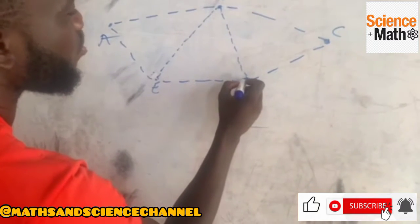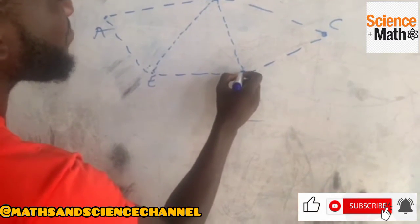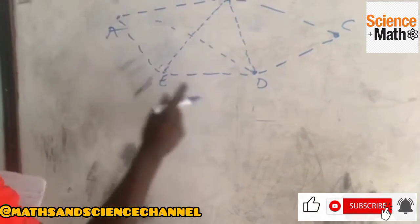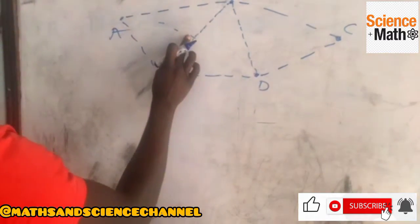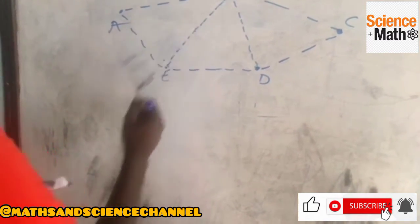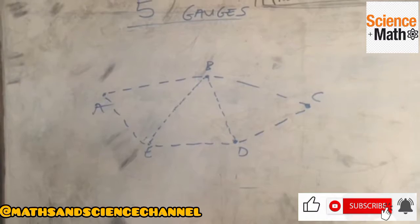So in joining them, you have to be smart. One line shouldn't cross each other.